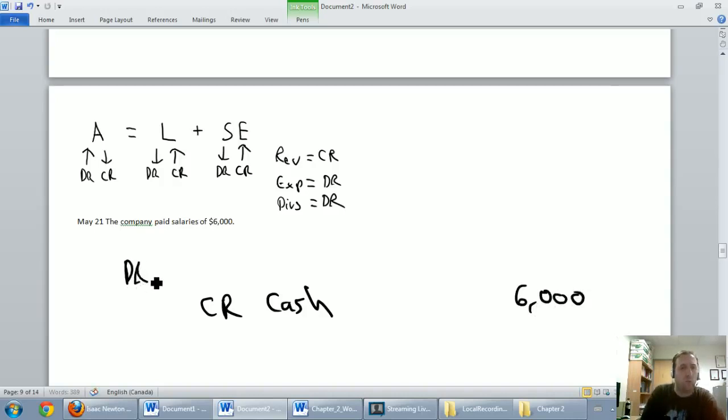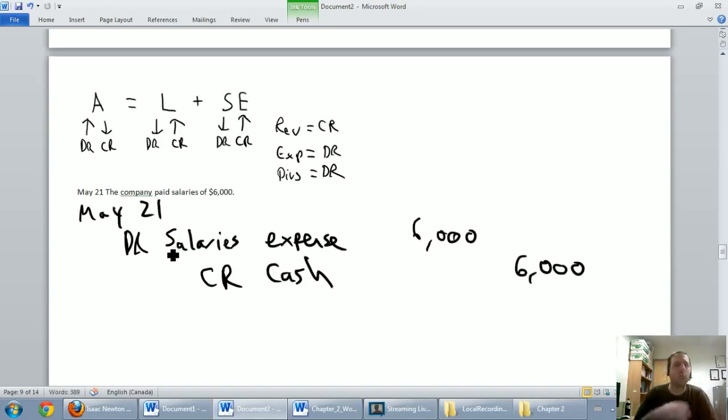Our debit here is, well, what do you think salaries are to a company? Are they an asset? No way. A liability? We can owe salaries, but that's not what this is. Shareholder's equity? Nope. Revenue, expense, or dividend? Salaries are an expense of a company. They're a cost of doing business. If you want to have a company that has employees, you've got to pay their wages. Wages and salaries are expenses. So we're going to debit salaries expense for $6,000. Our date is May the 21st. A lot of people get expenses and liabilities mixed together. As you practice more journal entries, you'll get a feel for when we're paying off a liability and when we're paying an expense.